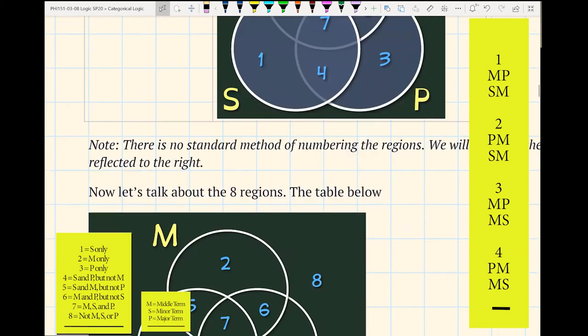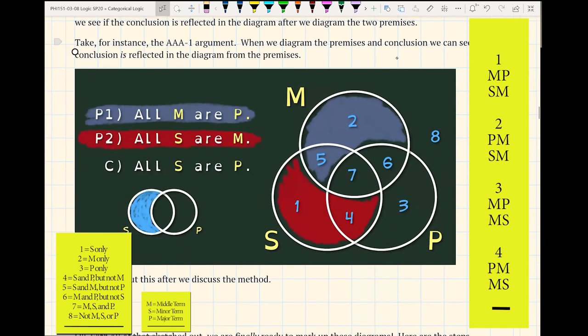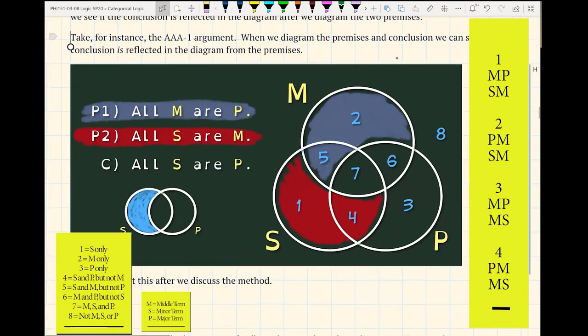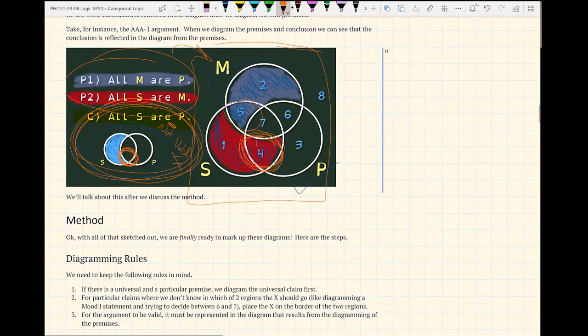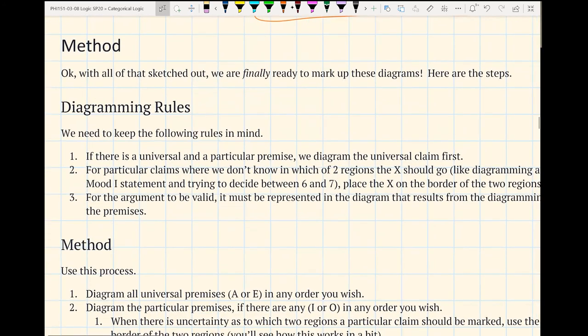Now, something that we need to keep in mind is that we never diagram the conclusion. And we'll talk about why in a little bit. We never diagram the conclusion. But that is where we would look for it when we go to test for validity.